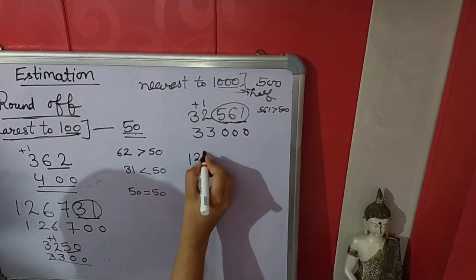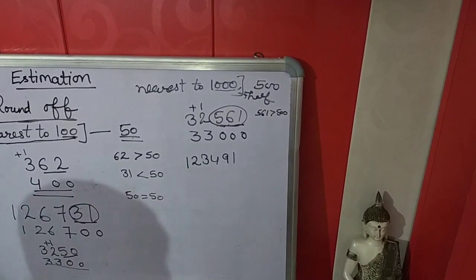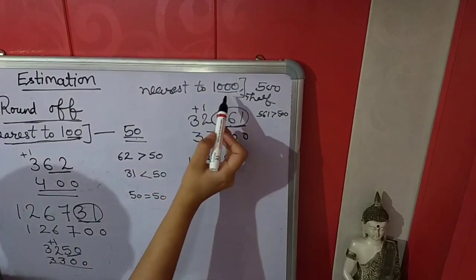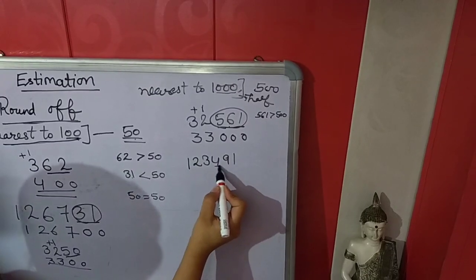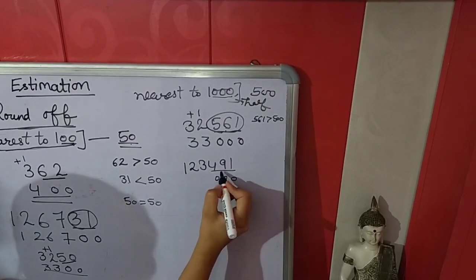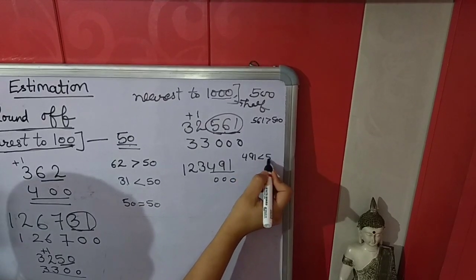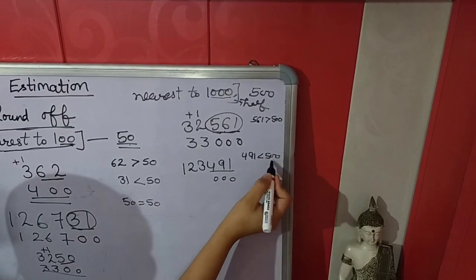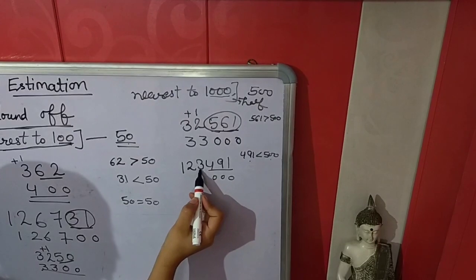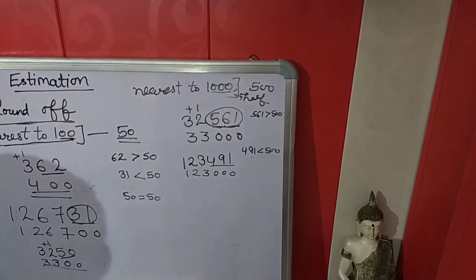Next number: we will again estimate nearest to 1000. In 1000 there are 3 zeros, so the last 3 numbers we convert into zeros. Now 491 is compared to 500 and it is less than 500. So we will not add anything in this number — it will come the same.